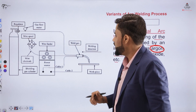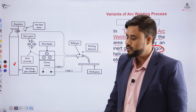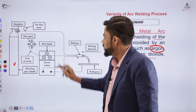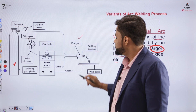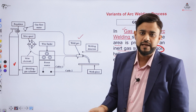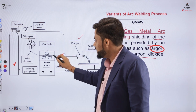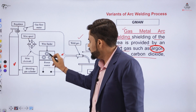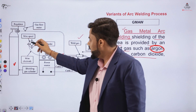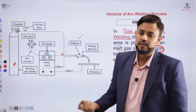In the basic schematic of the GMAW process, an inert gas cylinder is connected through a regulator to maintain gas pressure. The cylinder is connected to a welding gun which has one terminal for the shielding gas connection. A second connection carries the wire electrode that is continuously fed from a wire spool through rollers into the welding zone.